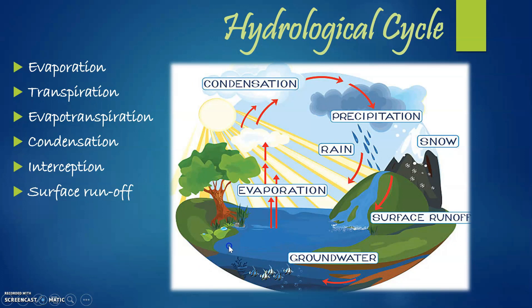The next feature is surface runoff — the movement of water across the soil surface towards stream channels instead of infiltrating. You can see in the picture that all the processes are going on: evaporation, condensation (formation of clouds), then precipitation in the form of rain or snowfall. When water moves towards the stream channel instead of infiltrating into the ground, that movement across the soil is called surface runoff.